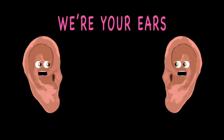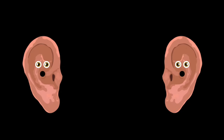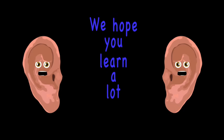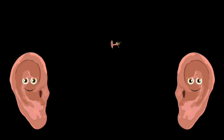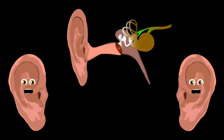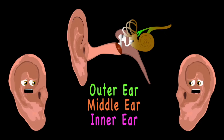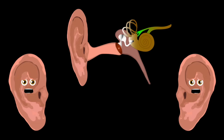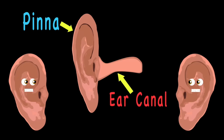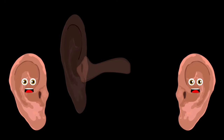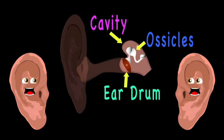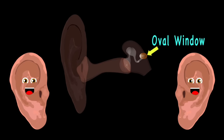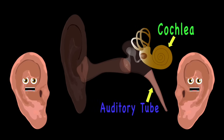Listen up, we're your ears. We're here to show you how we function. We hope you learn a lot and remember what you hear. Let's take a look at your ears and what they're made of. There are three parts of the human ear. First, we have the outer ear — it consists of two parts: the pinna and the ear canal. Onto the middle ear and its three parts: the eardrum, the ossicles, and the cavity.